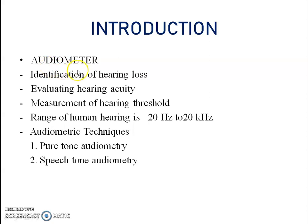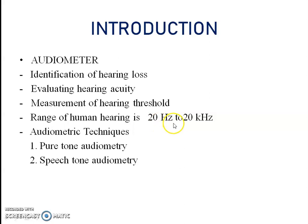An audiometer is equipment which is used for human ear identification of hearing loss, evaluating hearing acuity, or measurement of hearing threshold. The range of human hearing is 20 Hz to 20 kHz.